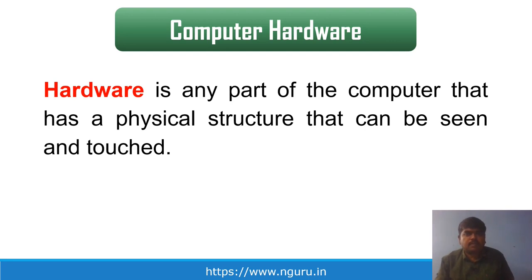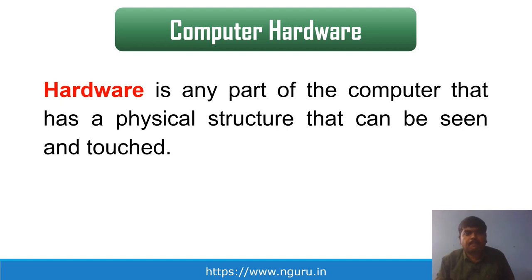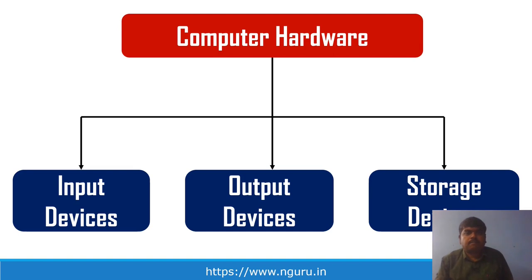The very first topic is computer hardware. Yesterday we saw that anything visible, that can be seen with the naked eye, is considered as computer hardware — it has a physical structure like mouse, keyboard, and other things. Broadly speaking, computer hardware is divided into three categories: number one, input devices; number two, output devices; and number three, storage devices.